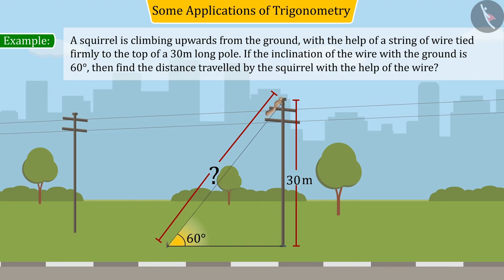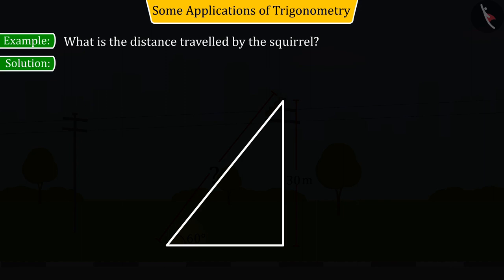Let us first construct the figure according to the given information. Suppose XO is a pole whose height is 30 meters, where a wire is tied to the top X of the pole which is connected with point Y on the ground, i.e., the place from which the squirrel climbs upwards. XY is 60 degrees inclined to the horizontal plane, from which we get a right-angled triangle XOY.